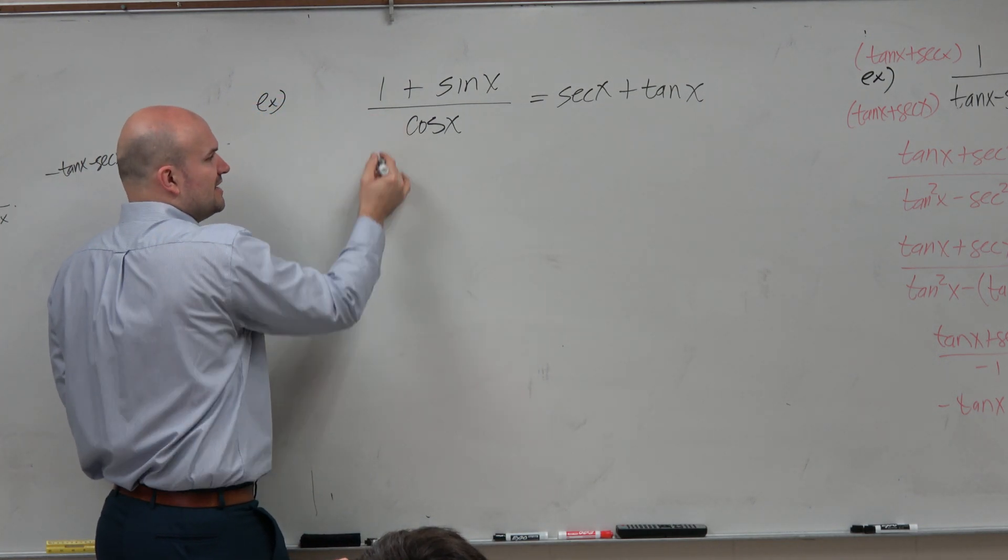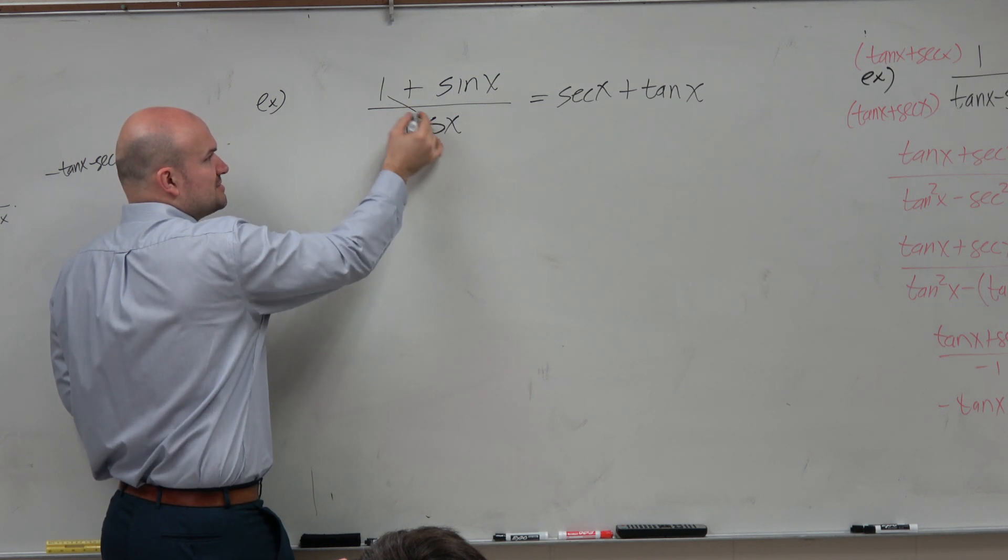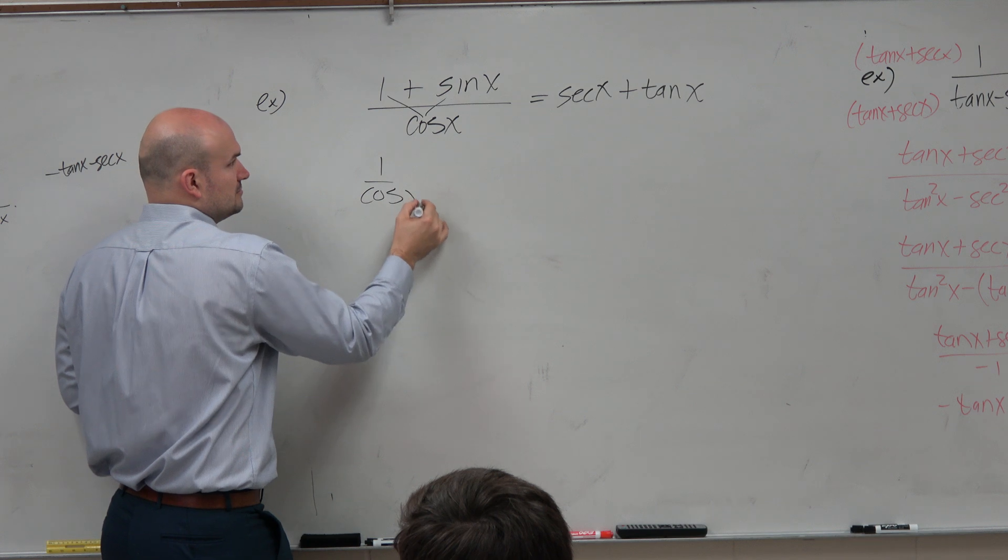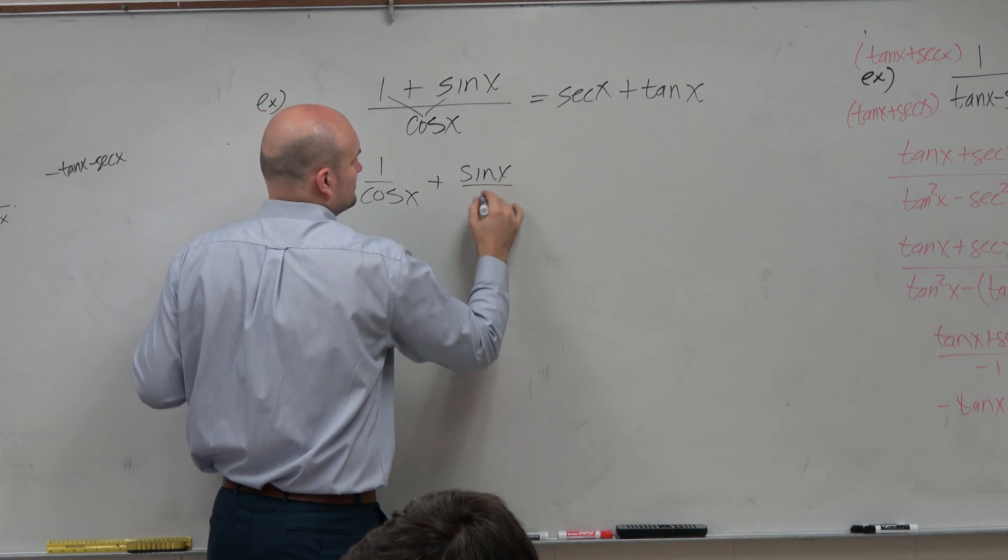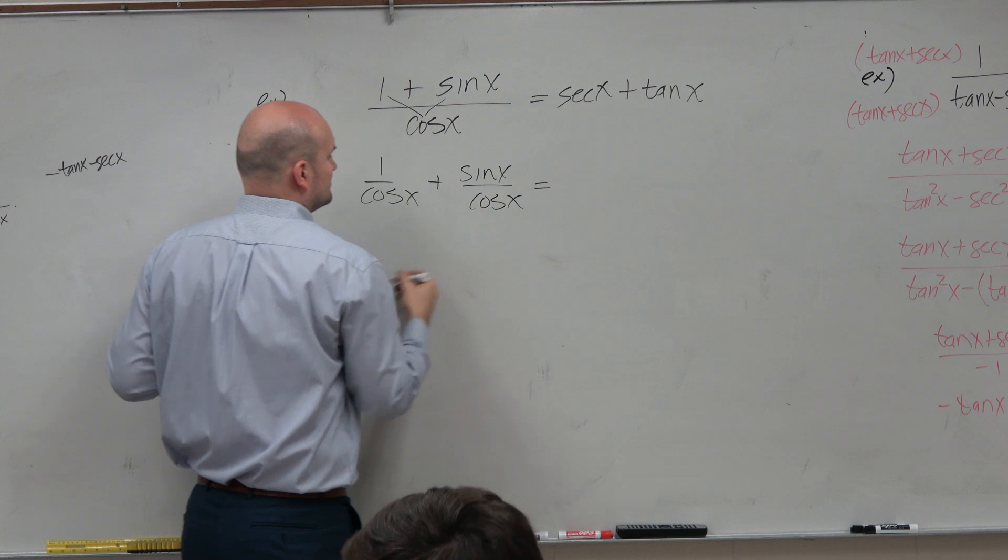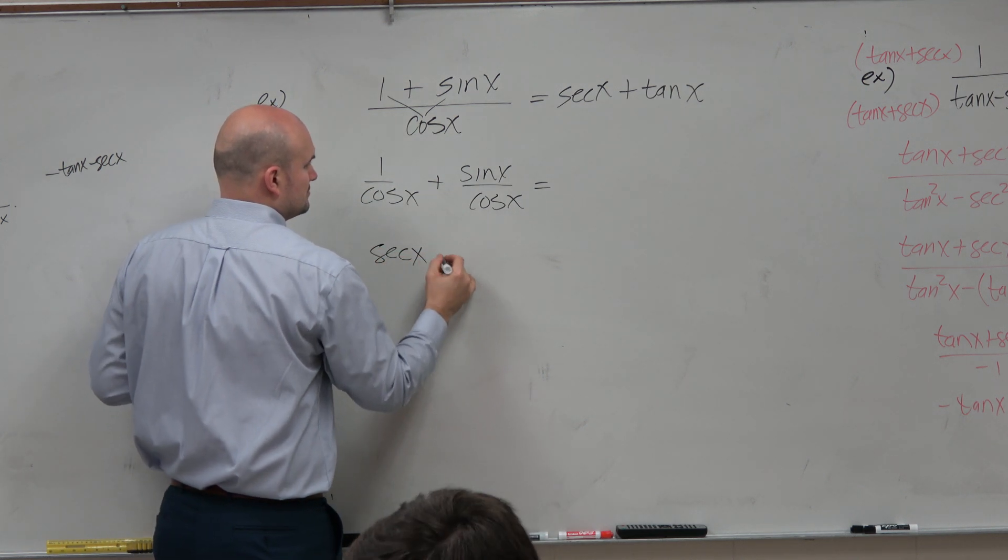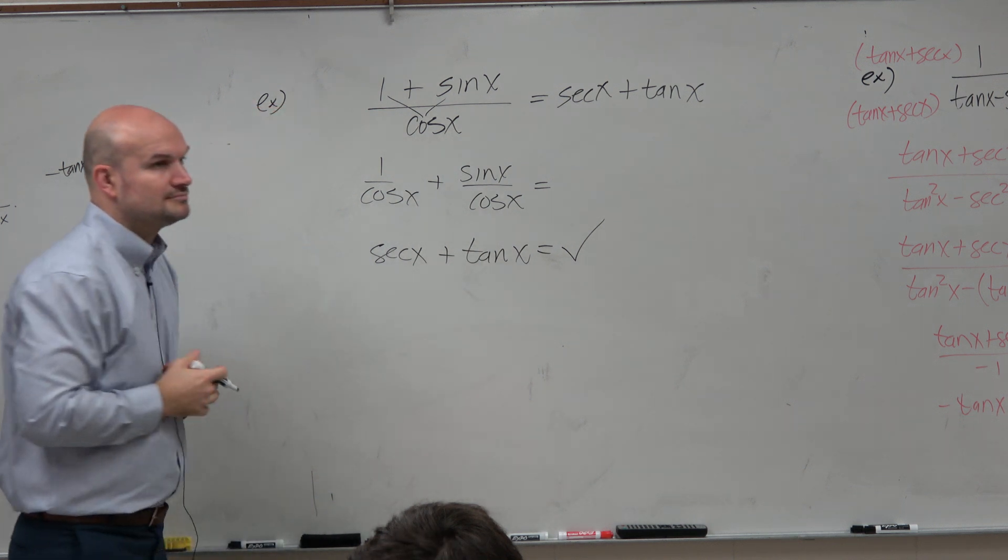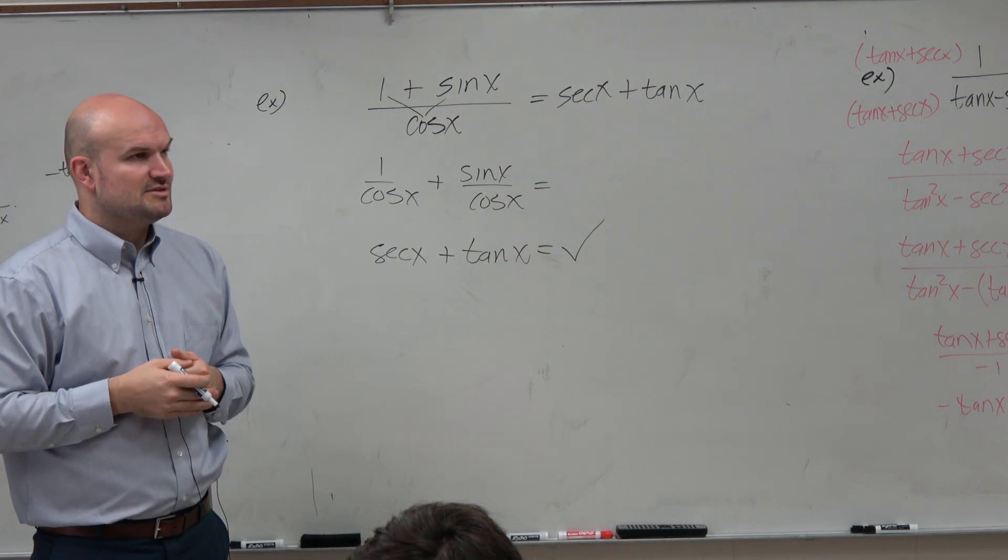So what would happen if I just divided the cosine into both these terms? That wasn't bad, right?